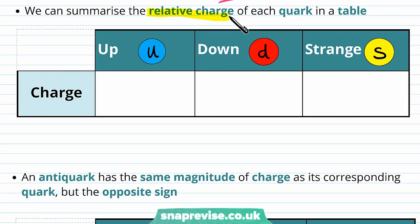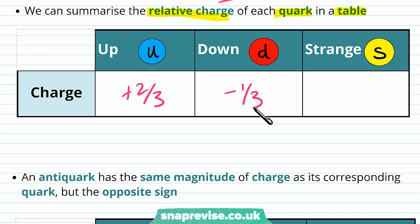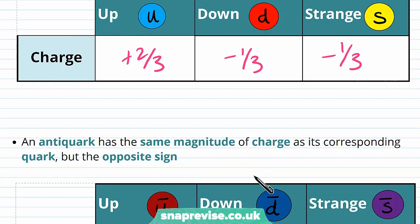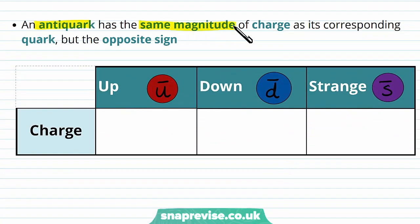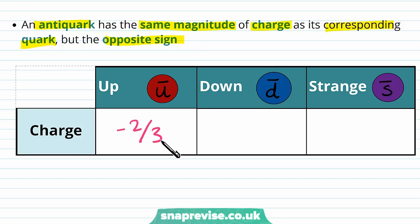We can summarise the relative charge of each quark in a table. The up quark has a charge of plus two thirds, the down quark has a charge of minus one third, and the strange quark has a charge of minus one third. An anti-quark has the same magnitude of charge as its corresponding quark but the opposite sign. So the anti-up quark has a charge of minus two thirds, the anti-down quark has plus one third, and the anti-strange quark has plus one third.